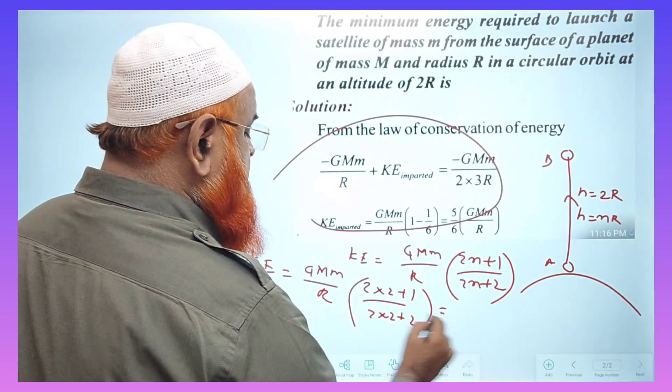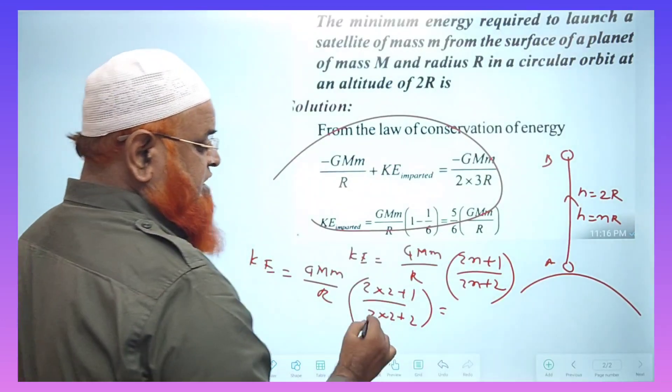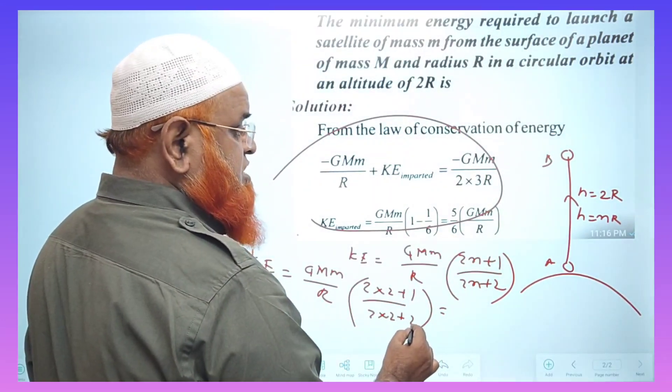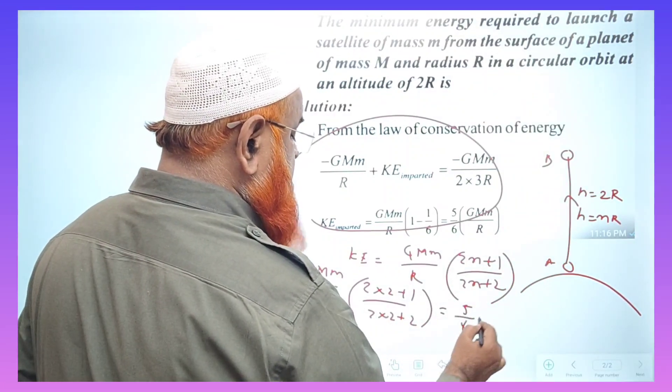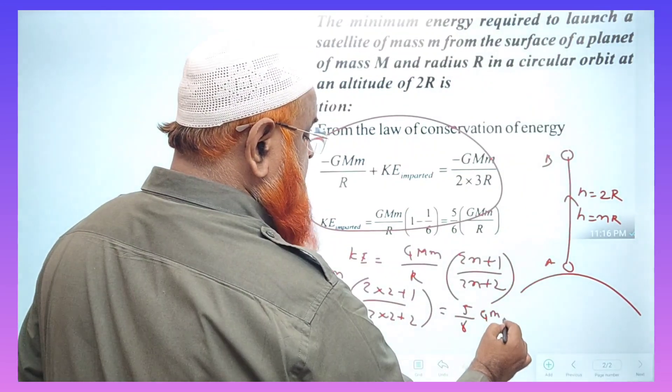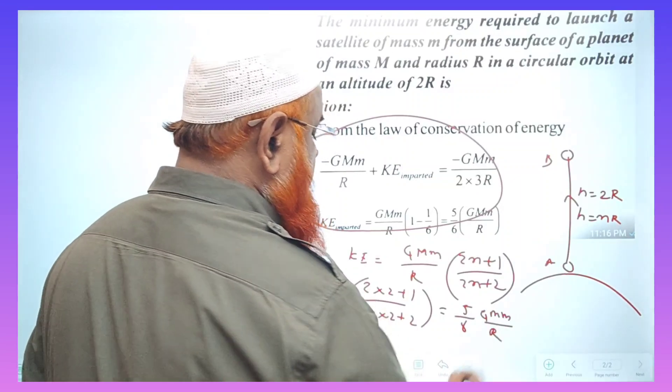So what are we going to get now? 4 plus 1, 5. 4 plus 2, that is 6 here. So therefore, you will be writing 5 by 6 GMm by R.